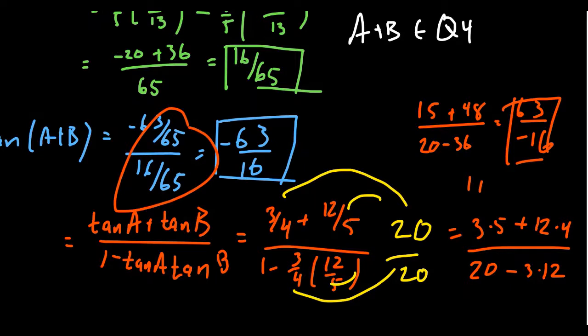That ends our discussion of the angle sum and angle difference identities. We never talked about secant, cosecant, or cotangent for angle identities. While they exist, like we saw with tangent, if you can do it for sine and cosine that's probably good enough. We don't necessarily need angle sum identities for all six trig functions — we can use reciprocity to get secant, cosecant, and cotangent from sine, cosine, and tangent.